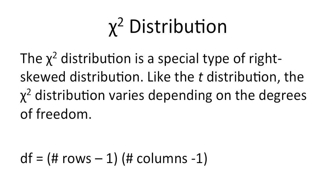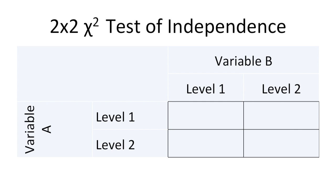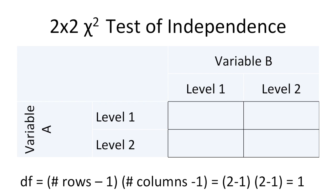Let's look at two examples. Here we have a two-by-two chi-square test of independence. Variable A has two levels and variable B has two levels. The degrees of freedom for a two-by-two chi-square test of independence is equal to two minus one times two minus one, which equals one.